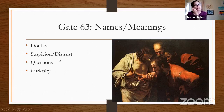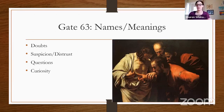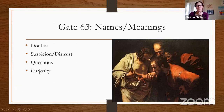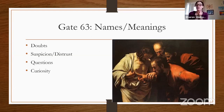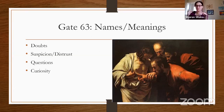Karen Carey Parker in Quantum Human Design provided a more uplifting name for this gate — curiosity — which highlights the positive potential. That name really helps highlight something fundamental to the process of the 63, and also to the other two gates we have in the crown: Gate 61 and Gate 64. All three gates in the crown are gates of inspiration and also gates of pressure.